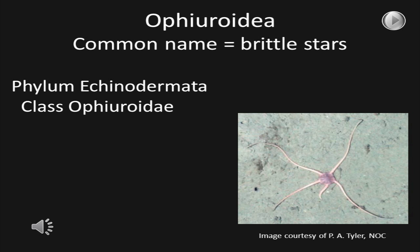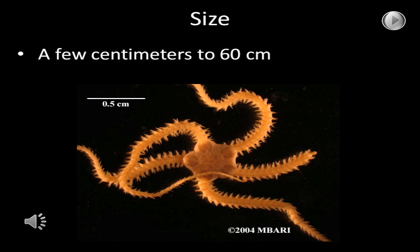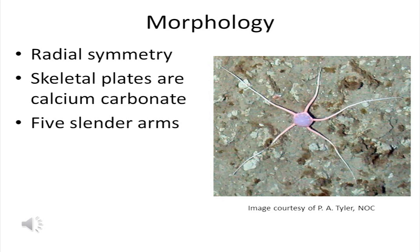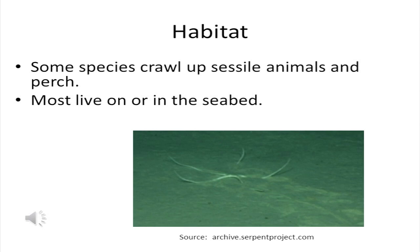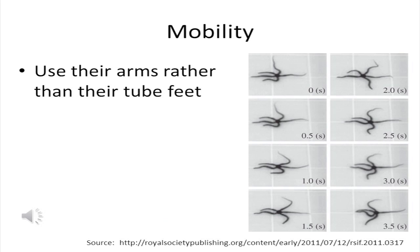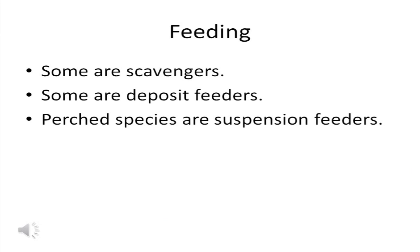The Ophiuroidea are the brittle stars; they are a class in the phylum Echinodermata. The distance between arm tip and arm tip can be a few centimeters to as much as 60 centimeters. Brittle stars have radial symmetry, skeletal plates of calcium carbonate, and five slender arms that are easily broken off — thus the name brittle star. As in starfish, the mouth is on the bottom. Some brittle stars crawl up sessile animals and perch, but most live on or in the seabed. Brittle stars use their arms rather than their tube feet to move. Some brittle stars are scavengers, some are deposit feeders, and those perched on taller organisms are suspension feeders.